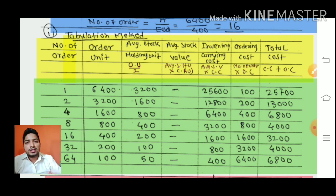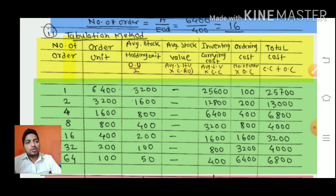The answer is the minimum total cost from the table. This is a 10-mark problem, so make sure to complete all columns carefully.